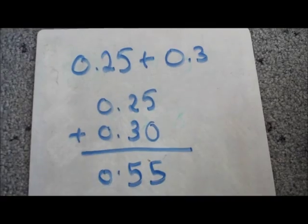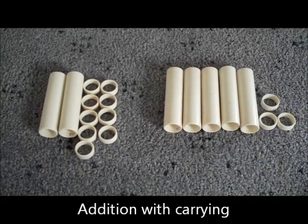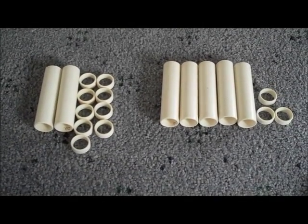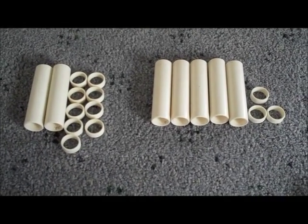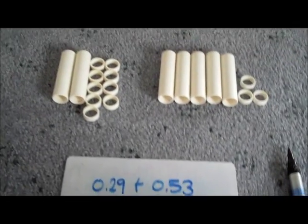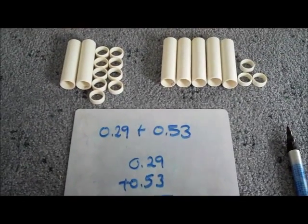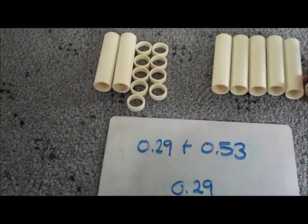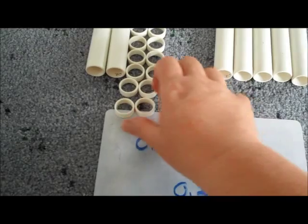The next one we'll do will be with carrying. So let's have a look at adding 0.29 so that's two tenths nine hundredths or twenty-nine hundredths plus 0.53 five tenths three hundredths or fifty-three hundredths. So what that looks like when we write it down looks like this.